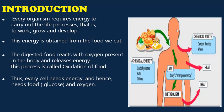Every organism requires energy to carry out the life processes — that is to work, grow and develop. This energy is obtained from the food we eat. The digested food reacts with oxygen present in the body and releases energy. This process is called oxidation of food. Thus every cell needs energy and hence needs food in the form of glucose and oxygen. The fundamental process of oxidizing food and release of energy in body cells is called respiration.